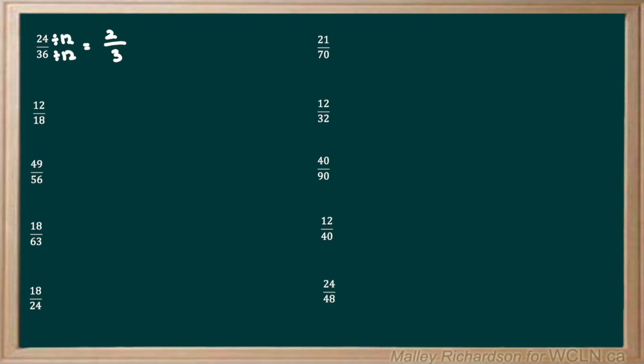Now we have 12 over 18. Again we want to ask what's the highest multiple that can go into 12 and 18. We know that 6 can go into 12 and 18, so let's divide the top and bottom by 6. 12 divided by 6 is 2 and 18 divided by 6 is 3. 2 thirds cannot be reduced down any further, so 2 thirds is our final answer.